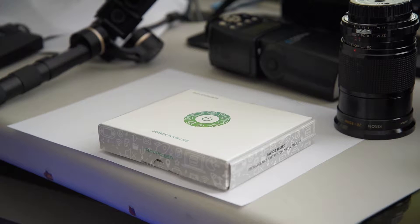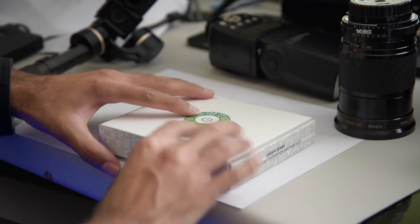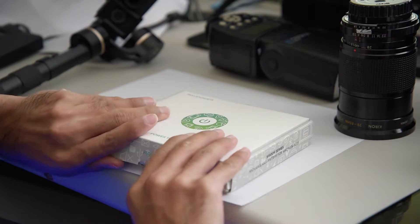Alright, so this is going to be an unboxing of the RAV Power Nikon EN-EL15 battery charger set. It comes with two batteries and the charger which can run off of micro USB power.